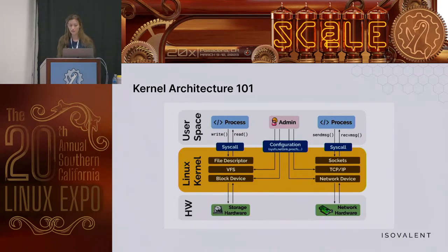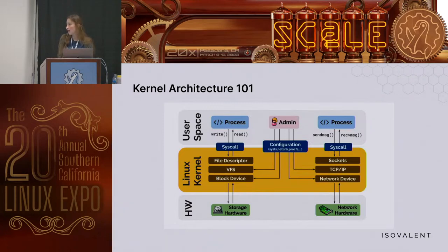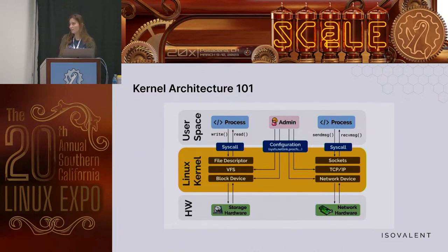The Linux kernel abstracts the hardware away using drivers. It needs to be aware of storage drivers and network drivers, but doesn't necessarily need to expose that logic to user space. On top we have user space where your applications run, and they communicate with the kernel using system calls. For example, file I/O uses syswrite and sysread, and making a network connection uses send message and receive message to open a TCP socket. In the middle we have middleware business logic: the virtual file system, process scheduler, TCP/IP, and firewall technology.